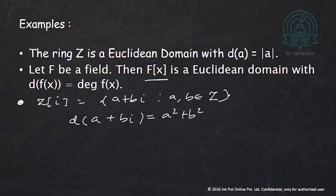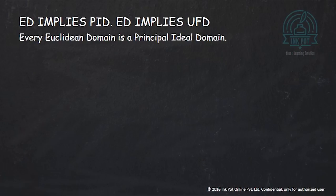We will now look at some important relations between Euclidean domains, principal ideal domains, and unique factorization domains. The first result says that every Euclidean domain is a principal ideal domain.